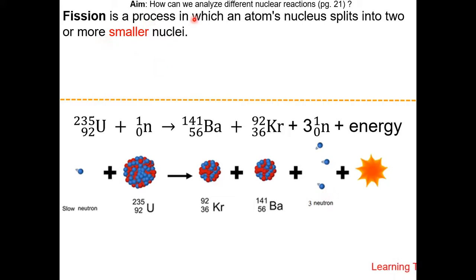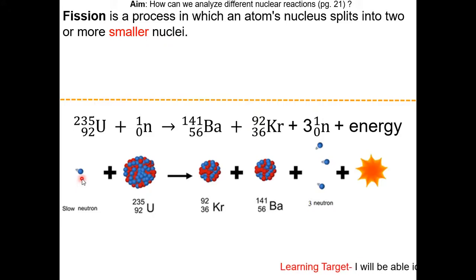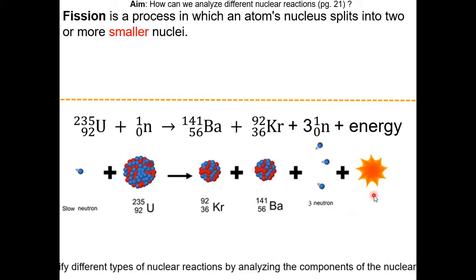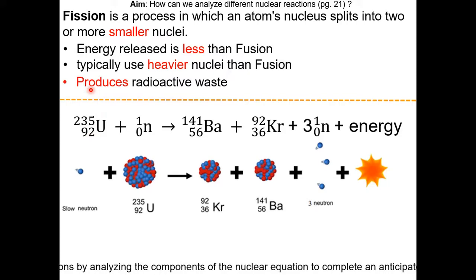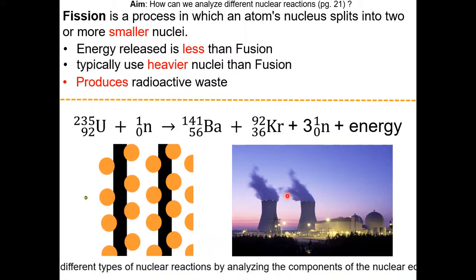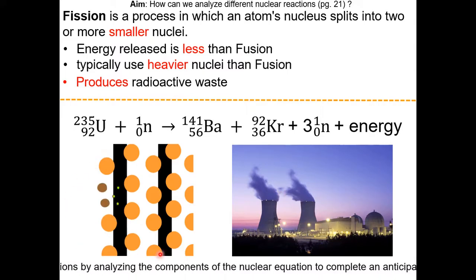Fission is a process in which an atom's nucleus splits into two or more smaller nuclei. Here is an example: a neutron bombards a uranium nucleus, which splits it into smaller nuclei and particles, releasing energy in the process. Fission reactions typically use heavier nuclei and produce radioactive waste, unlike fusion. Nuclear power plants usually use fission reactions to generate energy.